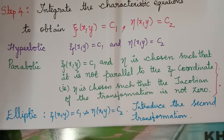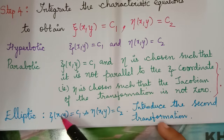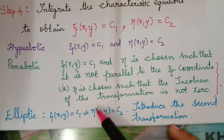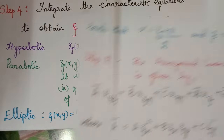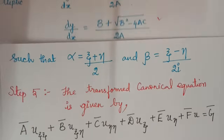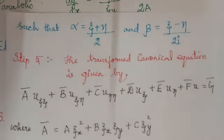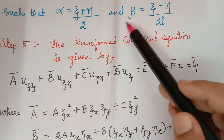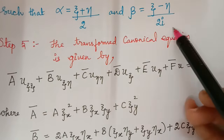For elliptic type, after finding the transformation xi and eta, there is a second transformation given by alpha equals (xi plus eta) / 2 and beta equals (xi minus eta) / 2i.